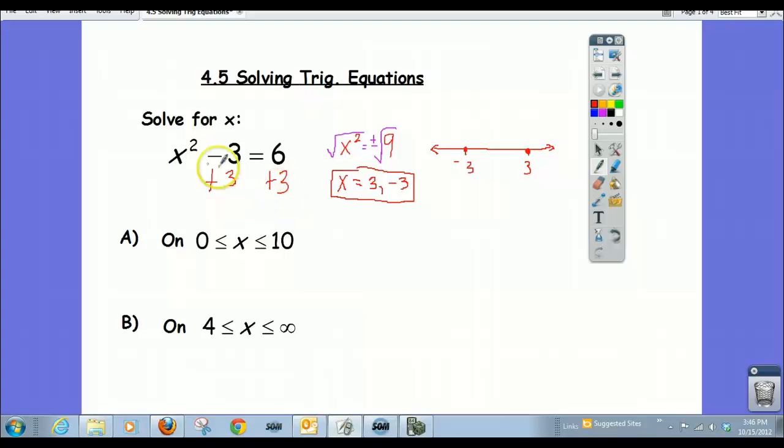Now, often when you're told to solve an equation for x, implied in the question is find all the answers that work. So in this case, 3 and negative 3 are all the x values that work, and we state them and move on. However, questions could be a little more specific. For instance, if I asked you to solve for x on the interval 0 to 10, in other words, only give me the answers that work that are between 0 and 10 inclusive.